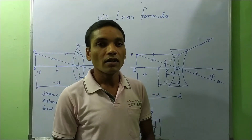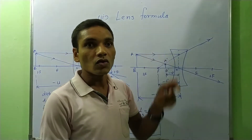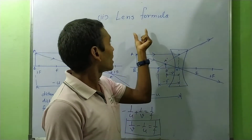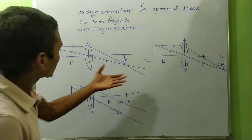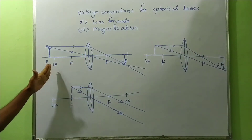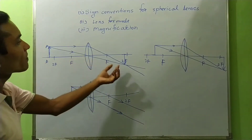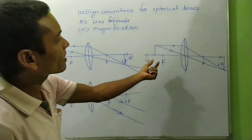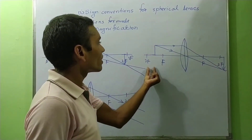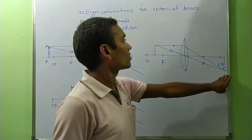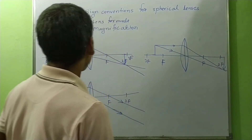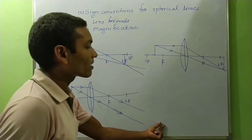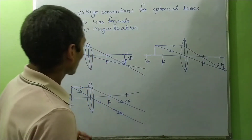When the object is placed beyond 2F on the left-hand side of the lens, the image is formed between F and 2F on the right-hand side. When the object is placed between F and 2F, the image is formed beyond 2F on the right-hand side. When the object is placed at the principal focus, the image is formed at infinity.